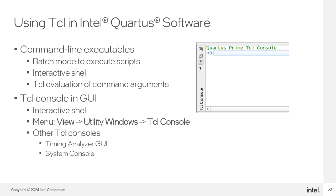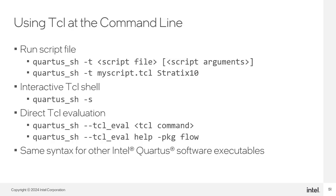Some tools in Quartus also support Tickle — for example, the Timing Analyzer GUI includes an interactive Tickle console, and the System Console used for in-system debugging also uses Tickle. To run a script file at the command prompt, specify the executable followed by the -t option and the script name and any arguments. To start an interactive Tickle shell, specify the -s option. Use the exit command to exit from the interactive shell. For direct Tickle command evaluation, use the --tickle_eval option followed by the command to evaluate — for example, help -package flow.